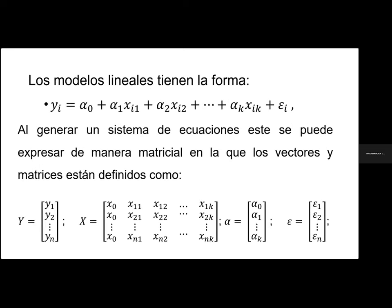En el caso de los modelos lineales, al generar un sistema de ecuaciones, estas se pueden expresar de forma matricial a través de vectores y matrices. Para los términos de la variable dependiente tenemos la variable Y a través de vectores, en tanto que para la variable de los términos independientes podemos presentar la matriz X. Para la variable alfa, que es la de los coeficientes, la podemos representar de forma vectorial, y finalmente para el caso de los errores, igual la podemos presentar como un vector.